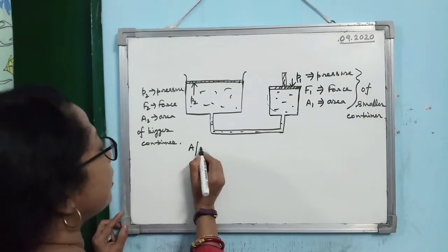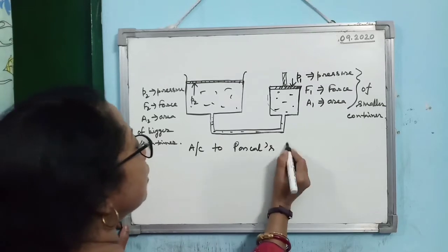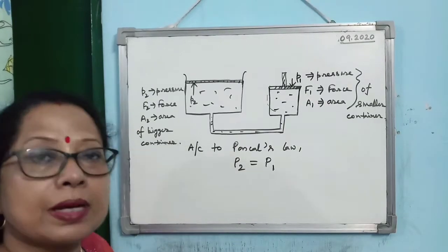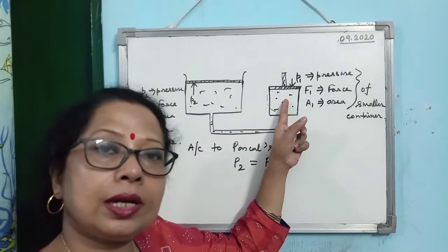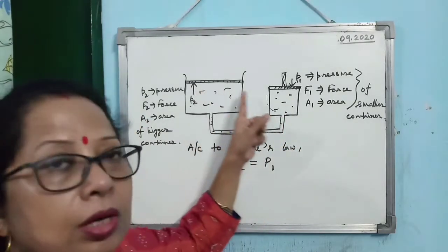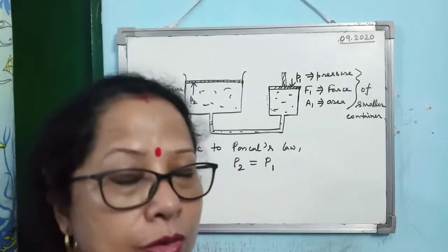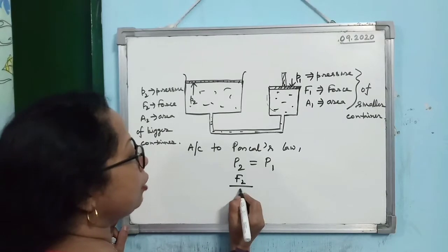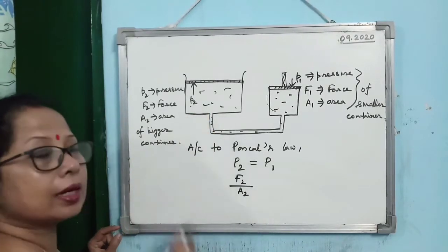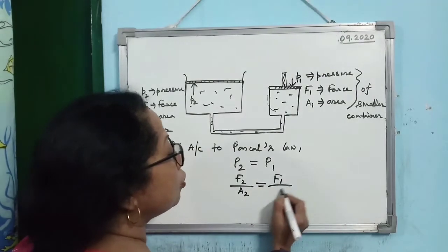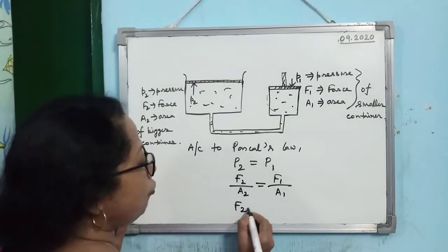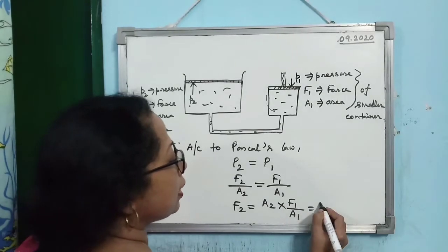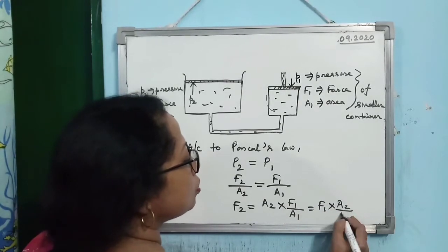According to Pascal's Law, P2 equals P1, because pressure transmitted in a confined liquid is equal and undiminished. Writing P2 = F2/A2 and P1 = F1/A1, and since P2 = P1, we get F2 = F1 × (A2/A1).